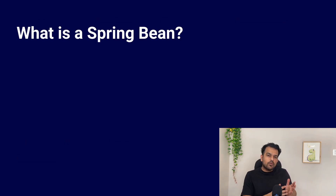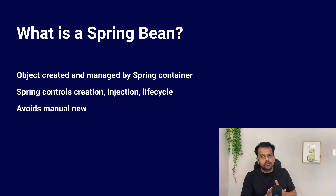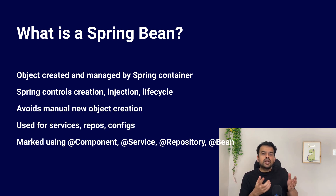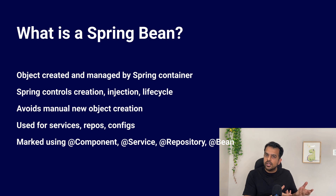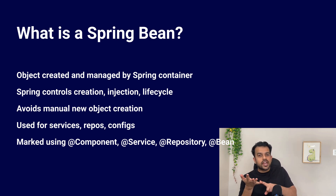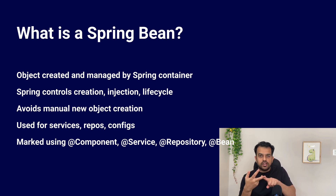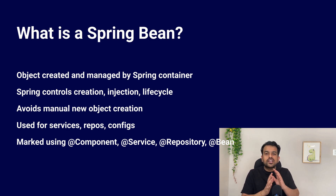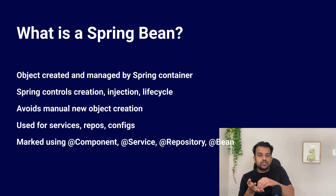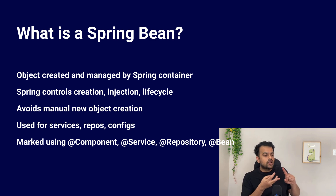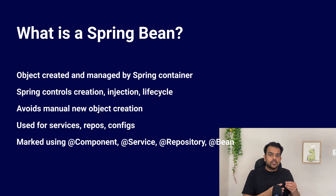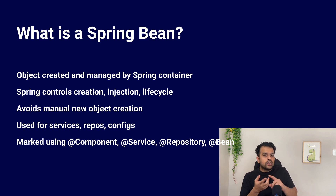Next question: what is a Spring bean? A Spring bean is an object that is created and managed by the Spring framework. In normal Java code we create objects with the 'new' keyword, but in Spring most important objects are managed by the Spring container — those managed objects are called beans. Spring decides when to create a bean, how to inject its dependencies, when its scope will end, and when to destroy it. In real projects, almost every service class, repository, and configuration object is a Spring bean. We mark them with annotations like @Component, @Service, @Repository, or @Bean.